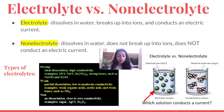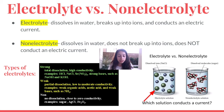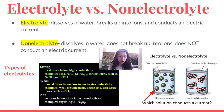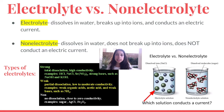The solution containing sugar molecules is the non-electrolyte solution because it does not conduct an electric current, while the solution containing NaCl does conduct a current. There are different types of electrolytes: strong electrolytes, which are strong bases; weak electrolytes, which are acids and weak bases; and non-electrolytes, which have close to zero conductivity.